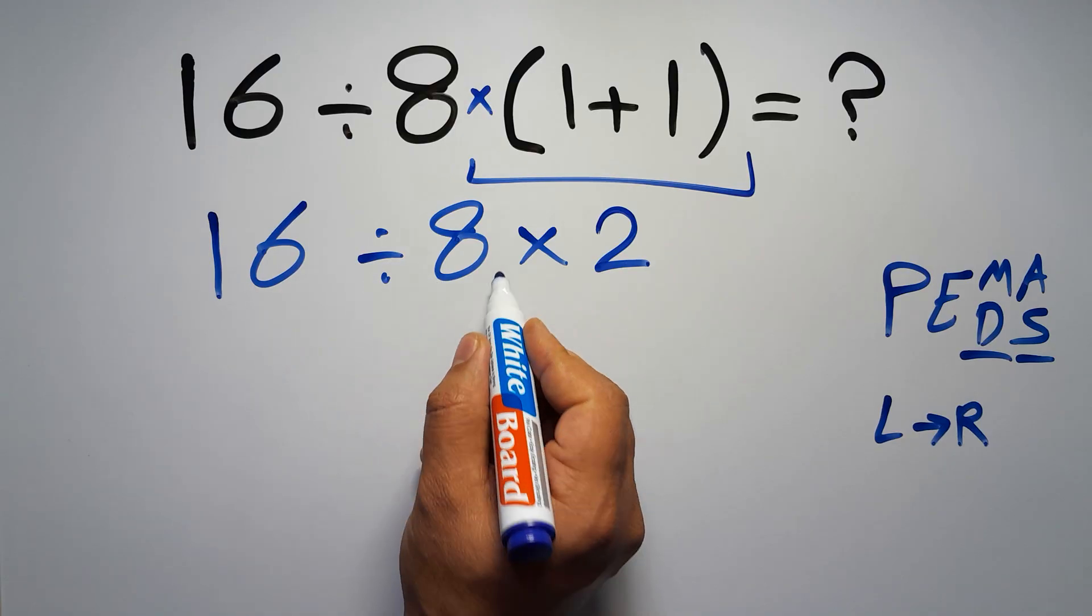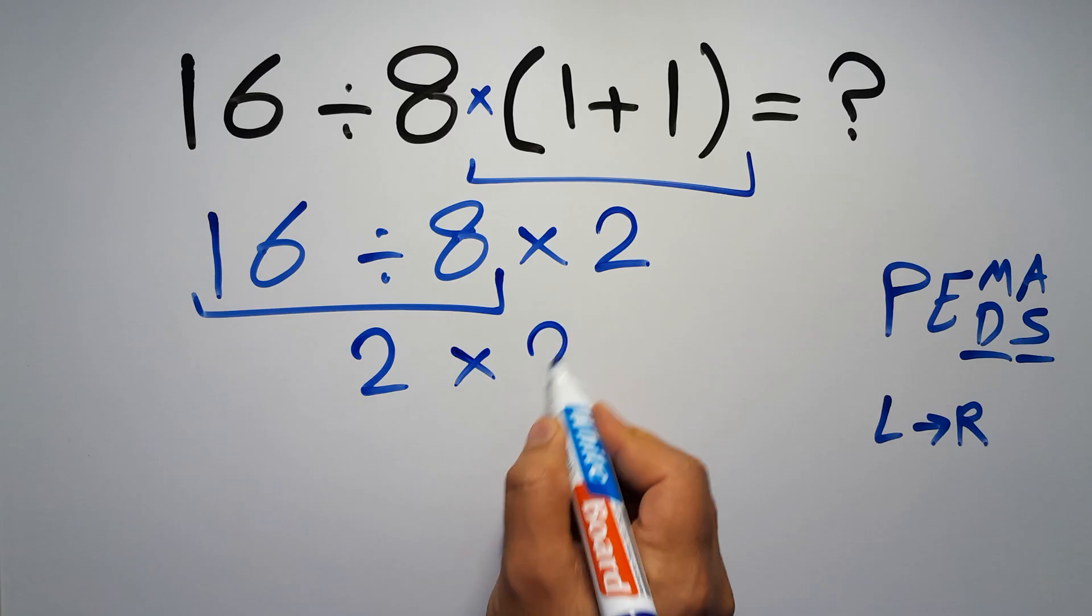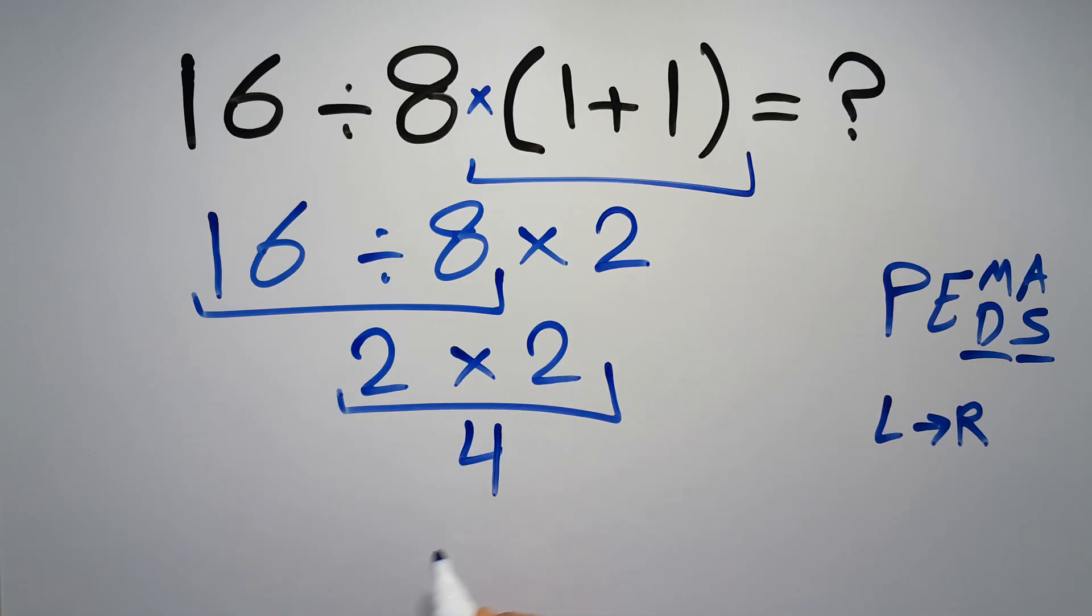16 divided by 8 is just 2. So, 2 times 2, which equals 4. And this is our final answer to this problem.